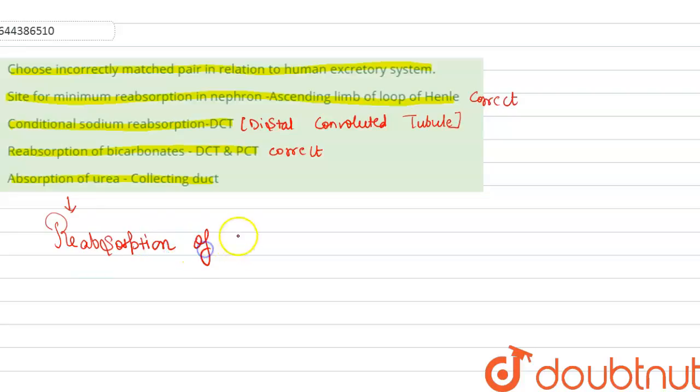So here would be the correct answer: the reabsorption of urea in collecting duct. According to this, the correct answer for this question is option 4. Thank you.